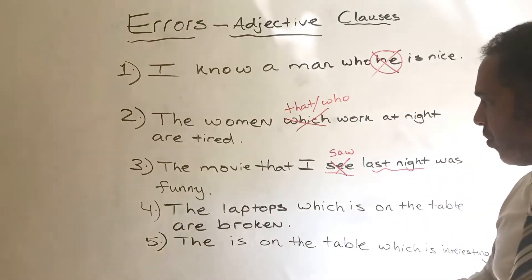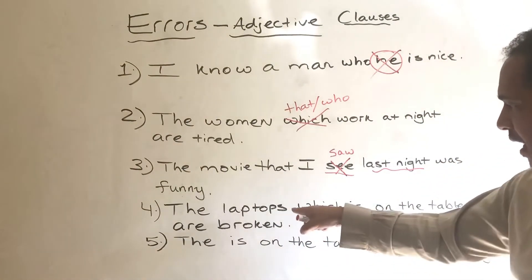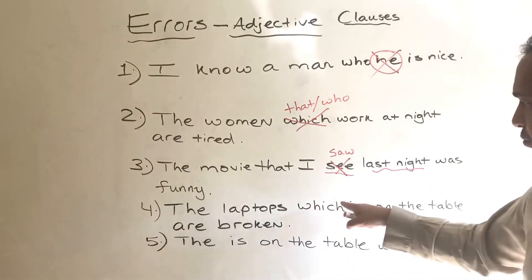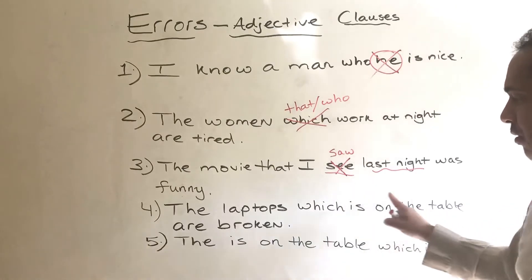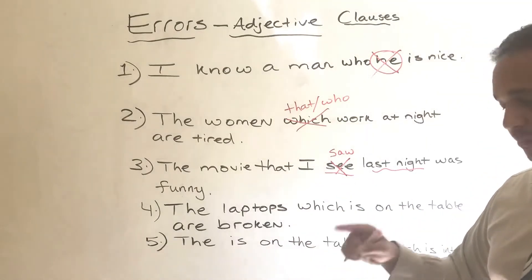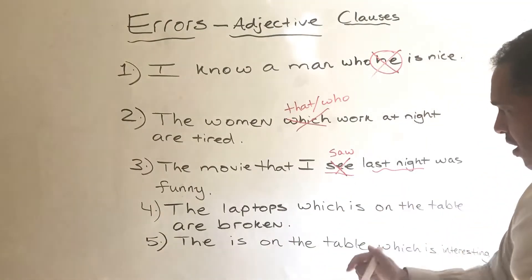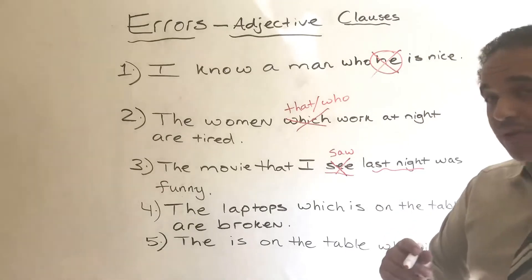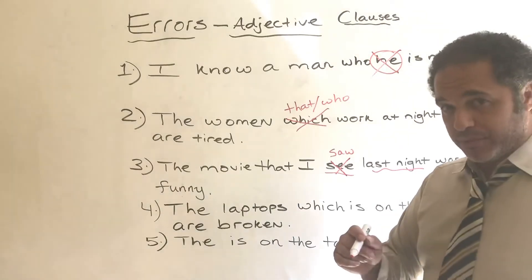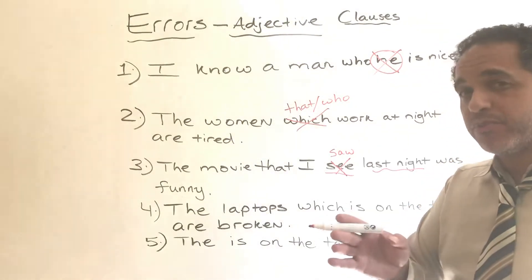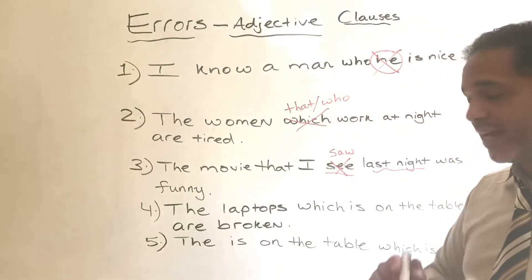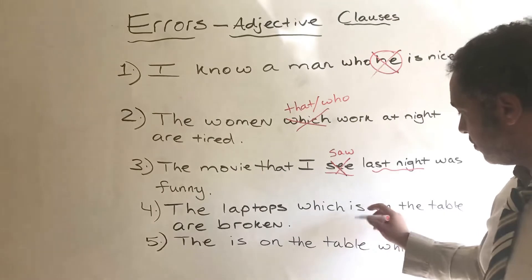Number four: 'The laptops which is on the table are broken.' The verb is very, very important inside the adjective clause.